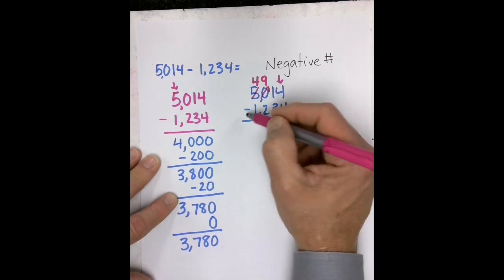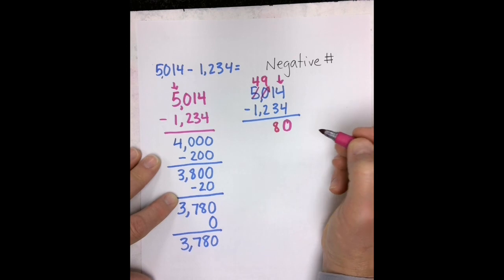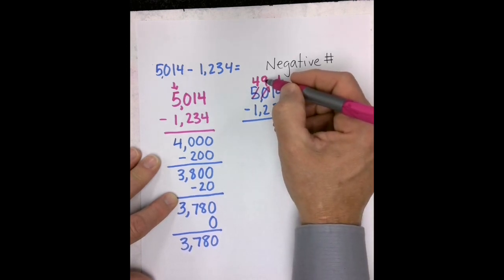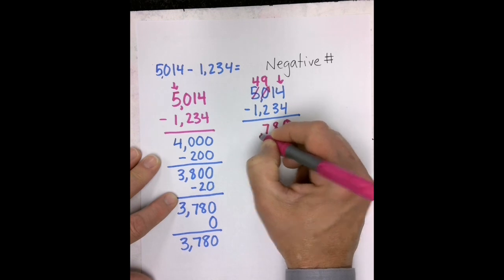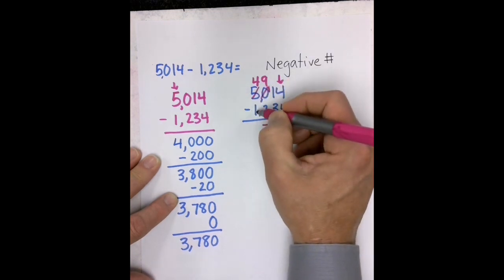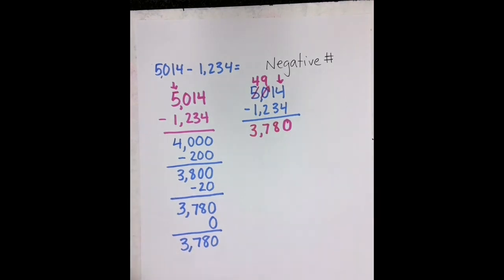Now we can do 11 minus 3, which is 8. We can do 900 minus 200, which is 700, and 4,000 minus 1,000, which is 3,000.